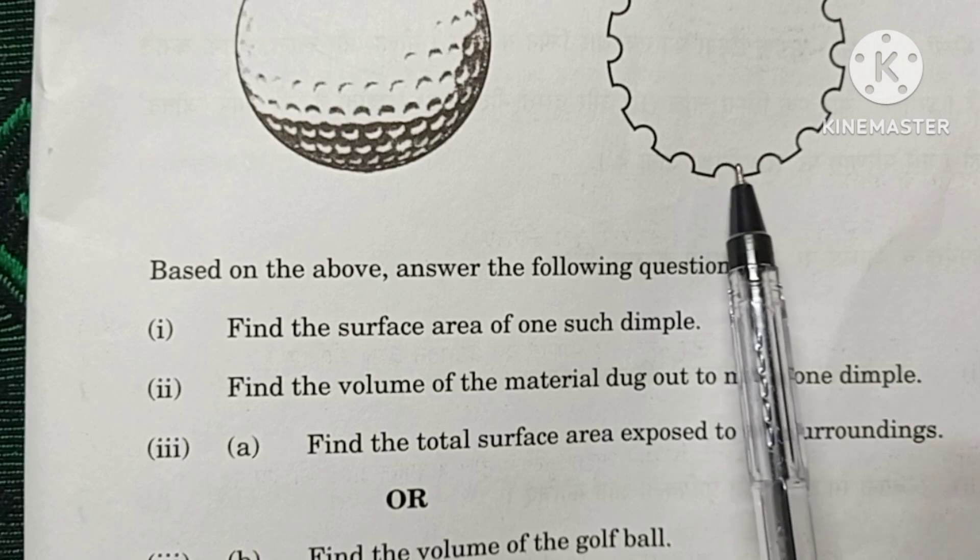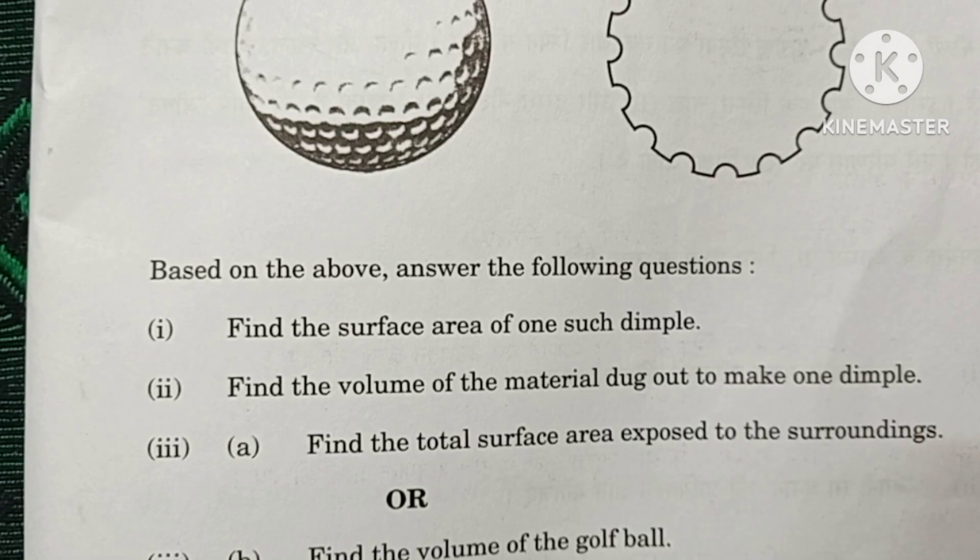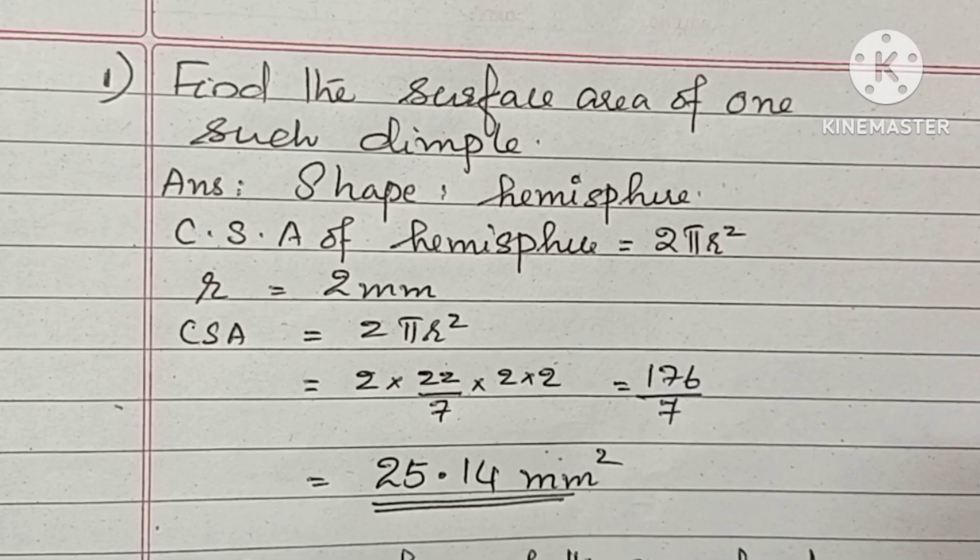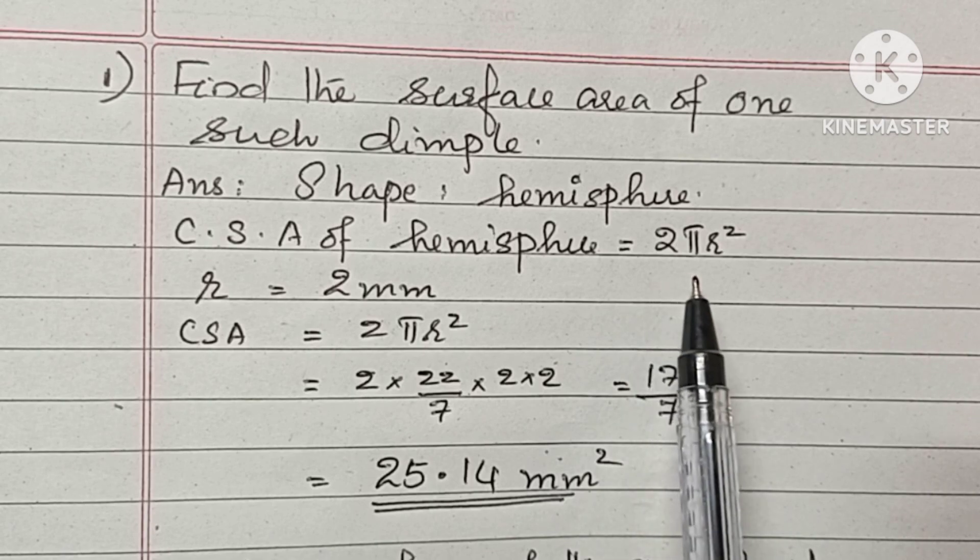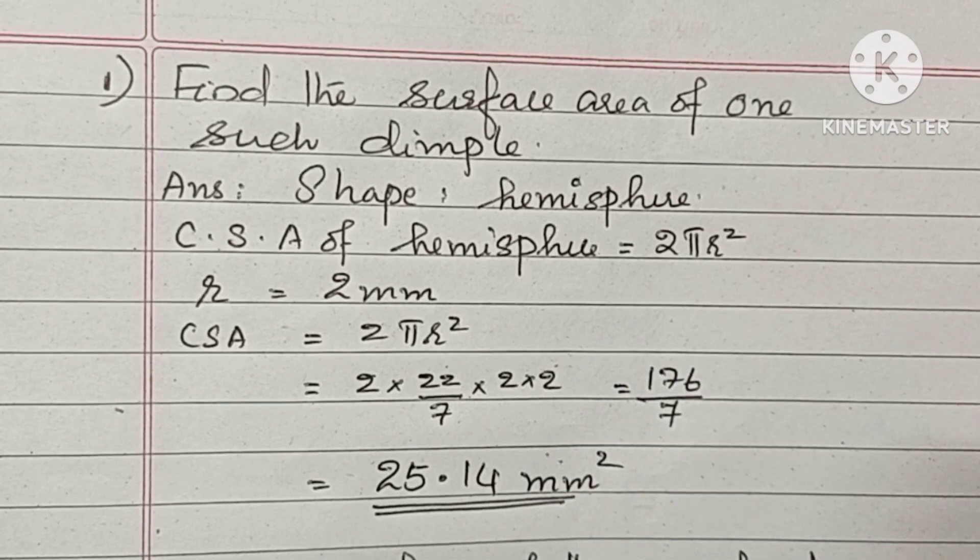That means the CSA of the hemisphere. It is a hemisphere. The CSA of the hemisphere formula is 2πr². Here the radius is 2 mm. Therefore, CSA is equal to 2πr², 2 into 22 by 7 into 2 into 2. The final answer is 25.14 mm².